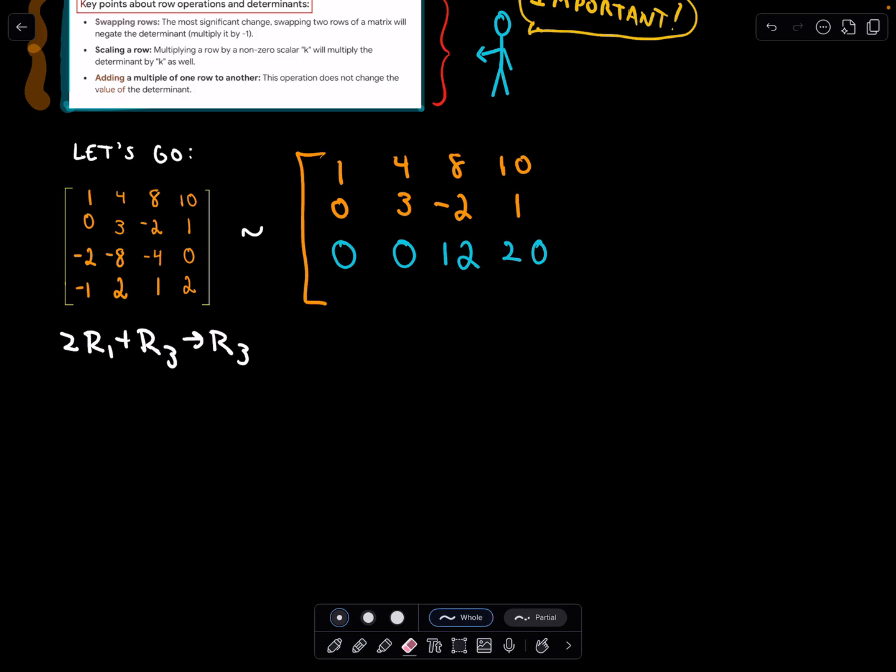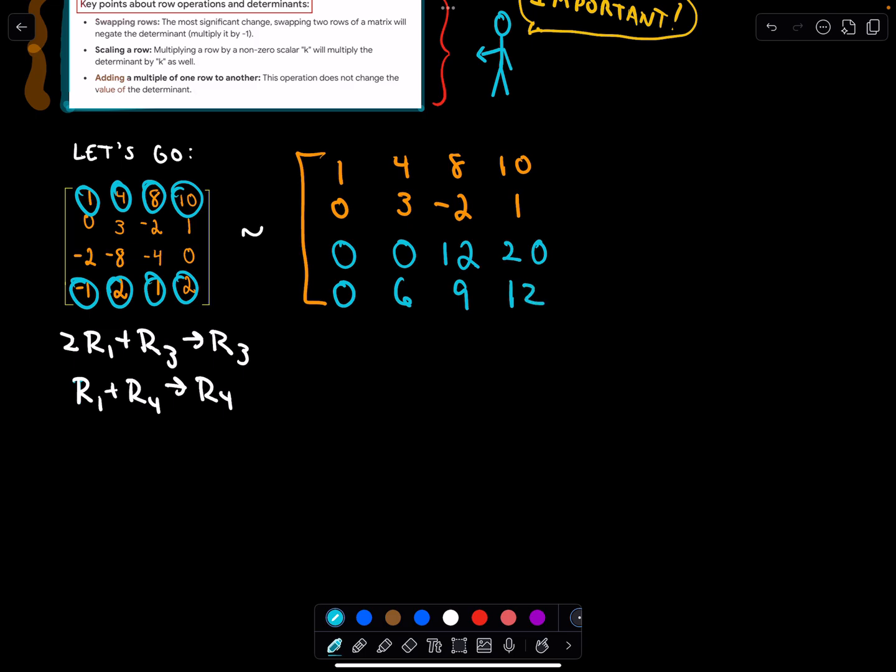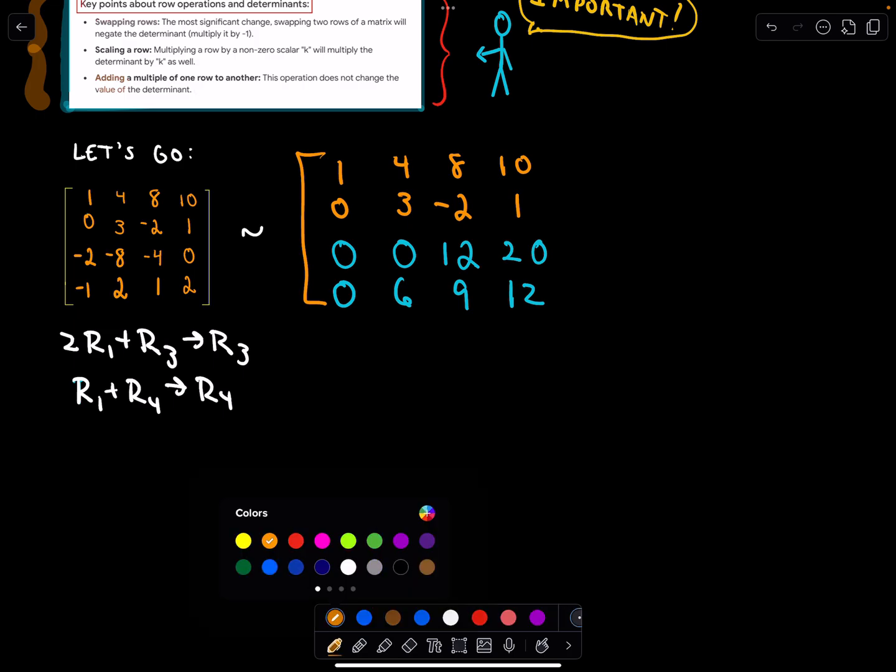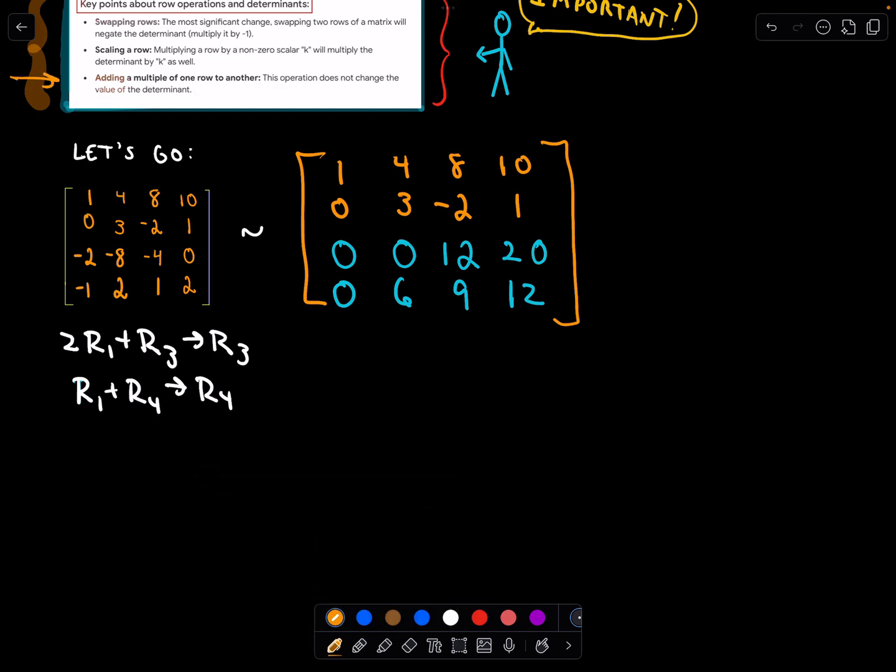Let's go ahead and do two row operations, because we also need to get a 0 in that bottom left corner. I think we can just take our first row and add it to our fourth row to get our new fourth row. We're just adding 1 plus -1, that's 0. 4 plus 2, that's 6. 8 plus 1, that's 9. 10 plus 2, that's 12. Now I think we've dealt with that first column. Notice our row operations that we did: nothing changed the determinant, because all we did was just use this adding a multiple of one row to another.